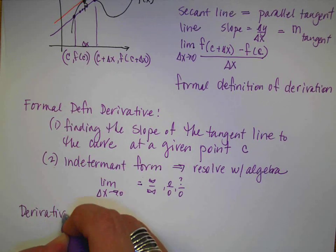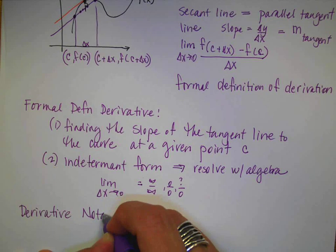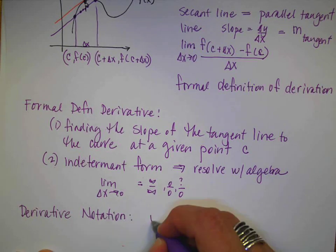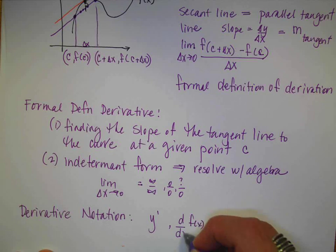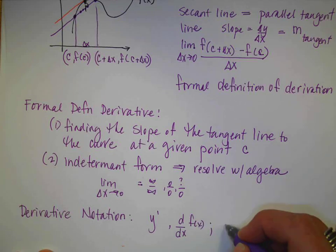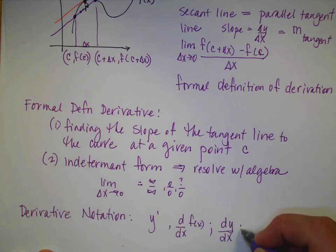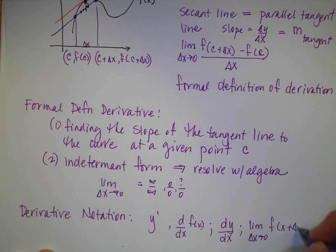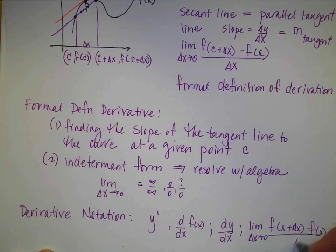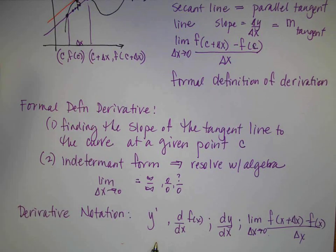Remember there are several different ways to notate the derivative: y prime, the derivative of the function with respect to x, the derivative of y with respect to x, or the formal limit definition - the limit as delta x goes to zero of f(x + delta x) minus f(x) over delta x. Remember this is just the slope calculation.